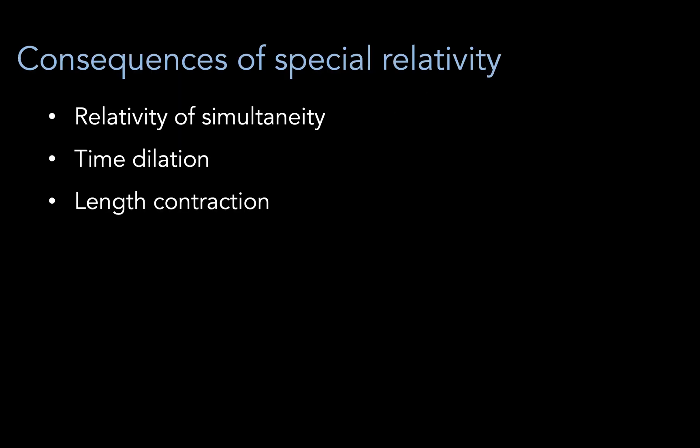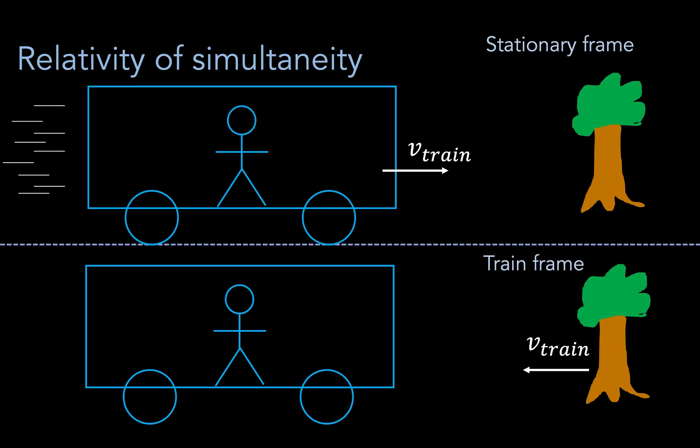This revolutionary framework had some pretty strange implications. The overarching theme is that in some ways, reality is dependent on your frame of reference, and this is starkly demonstrated by the consequence of the relativity of simultaneity.